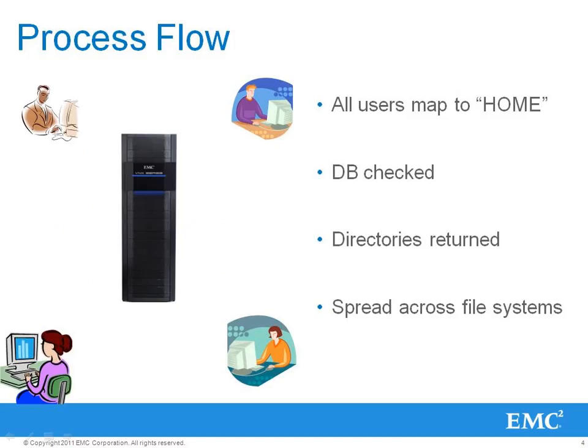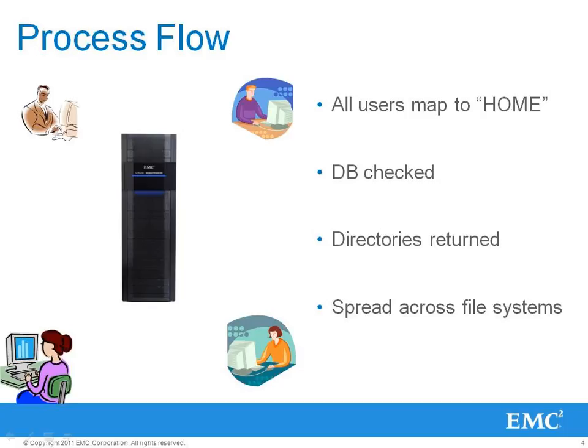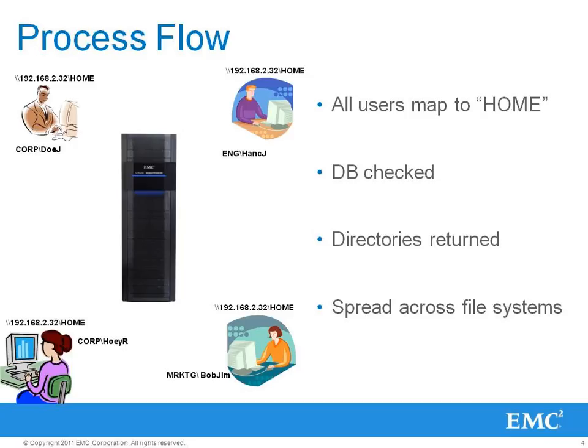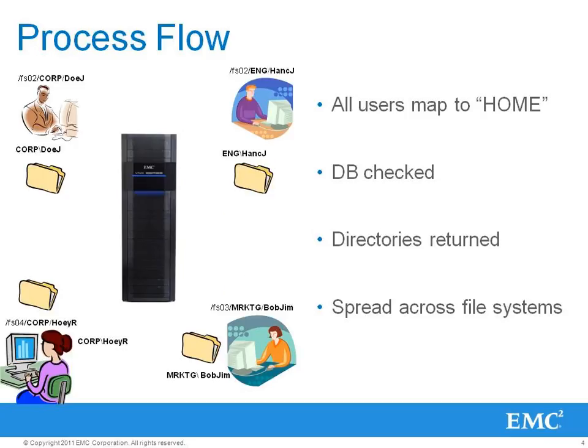Automation and extensible rule configuration are at the heart of the VNX Home Directory feature. When a user logs into the universal home share, their credentials are evaluated against the home directory database and automatically mapped to the appropriate file system share.